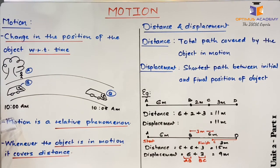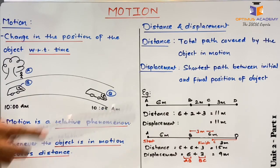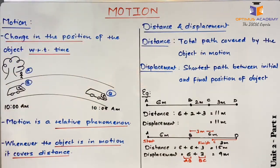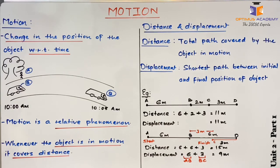I hope you have understood what motion is, how we can explain motion as a relative phenomenon, and what distance and displacement are in relation to motion. In our next video, we are going to discuss speed and velocity for objects in motion. Thank you.